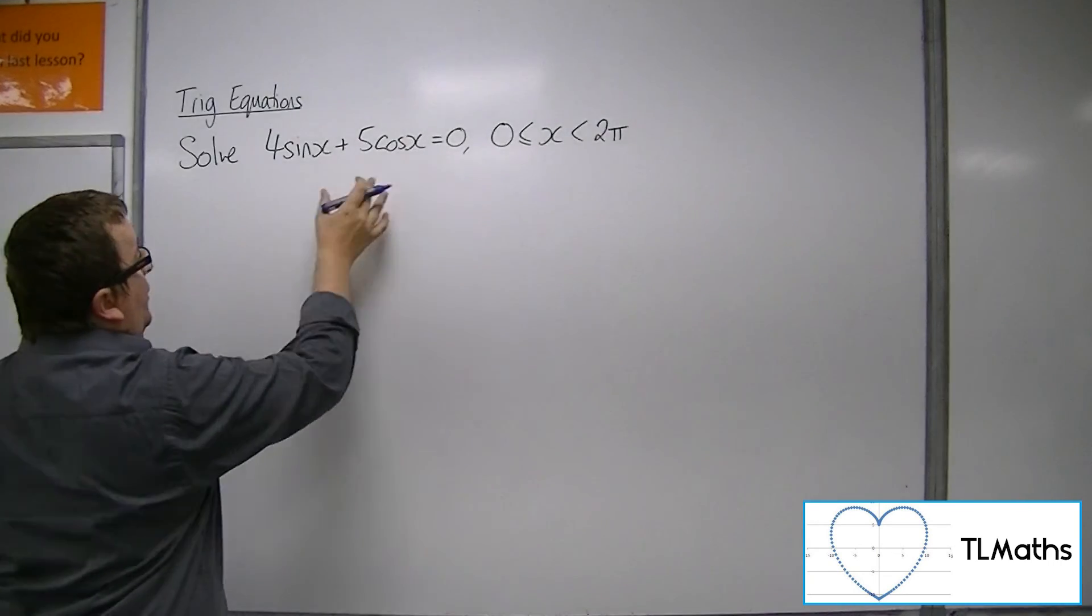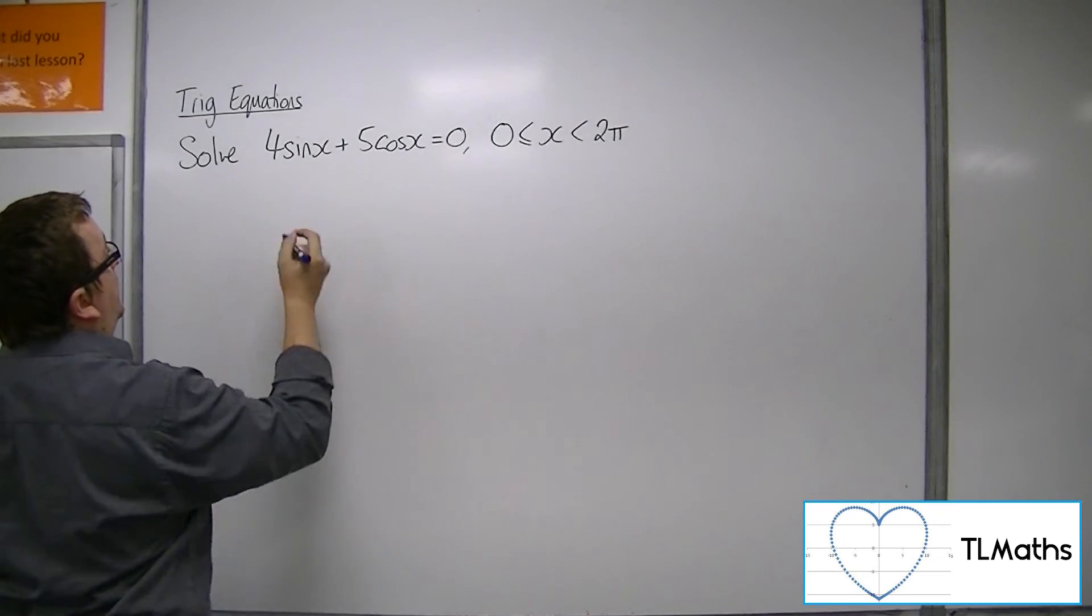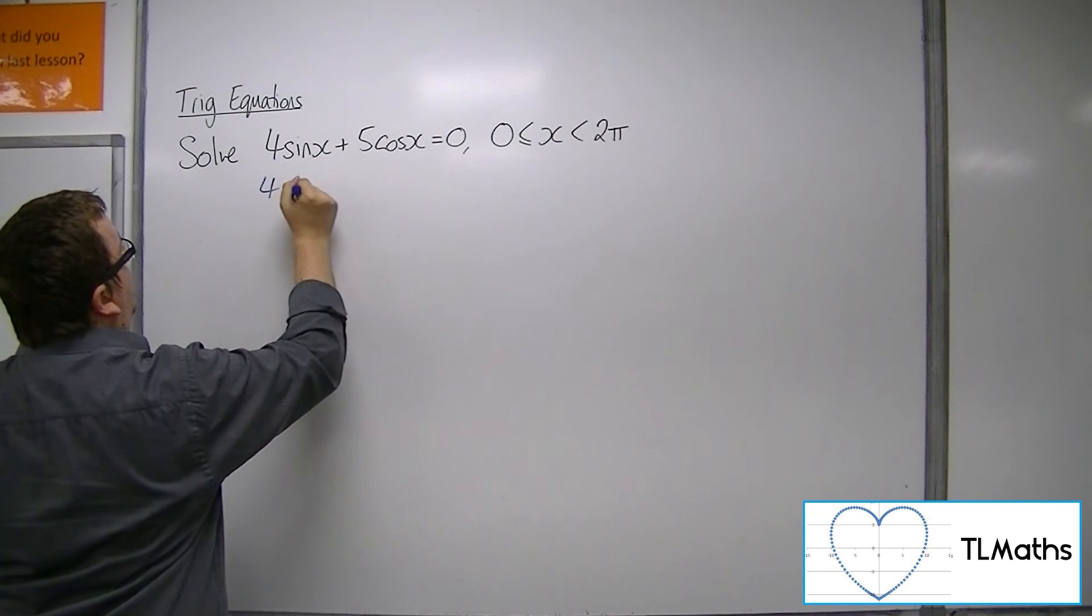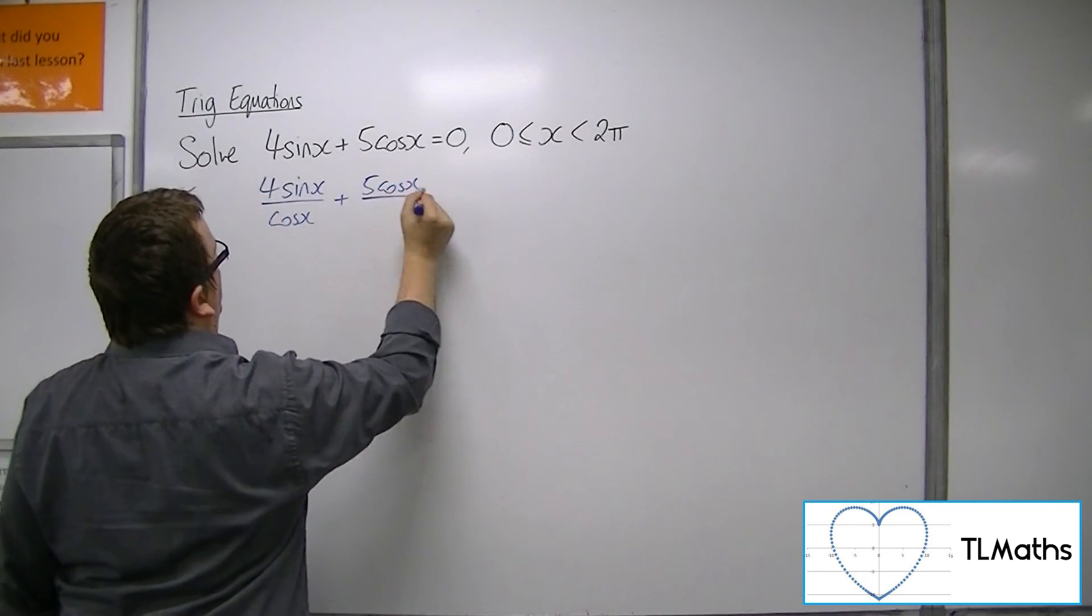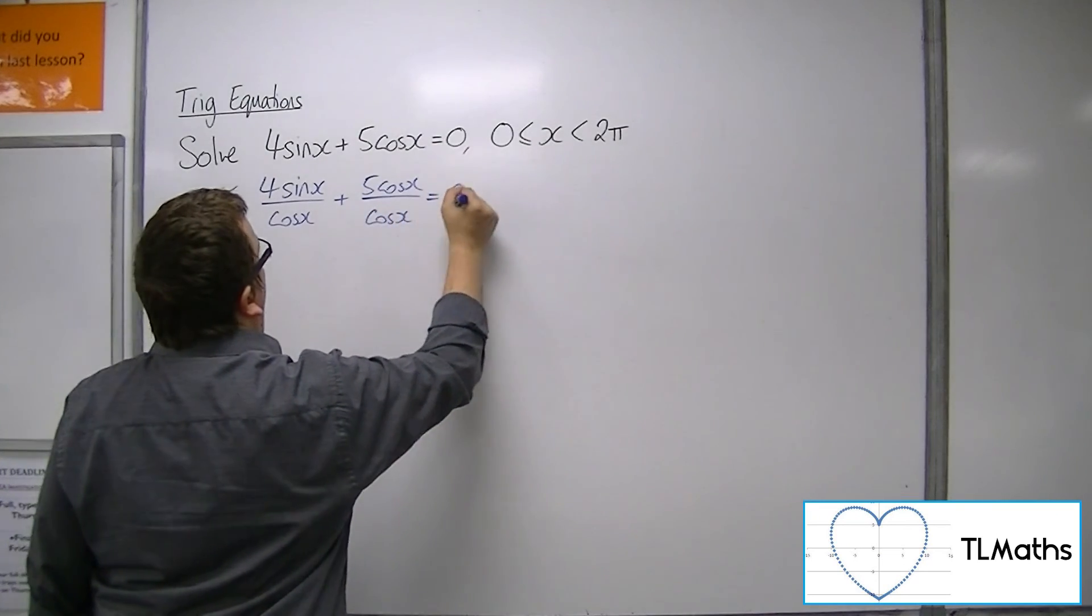So first step is divide everything by cosine of x. So 4sin(x) over cos(x) plus 5cos(x) over cos(x) equals 0.